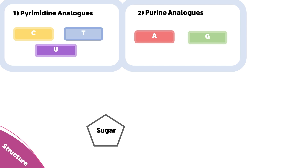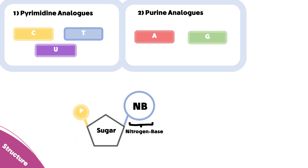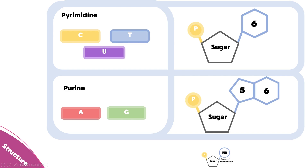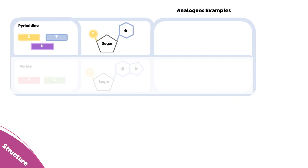Let's start with the first two types. Every nucleotide in the DNA is formed of a five-membered ring of sugar, a nitrogen base that defines the identity of the nucleotide, and a phosphate group on the opposite side. The naturally occurring pyrimidine nucleotide has a six-membered ring nitrogen base, while the purines have five- then six-membered rings.